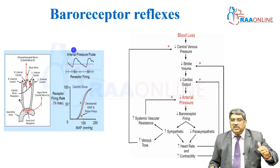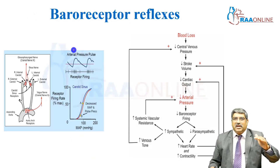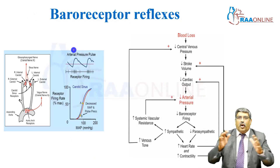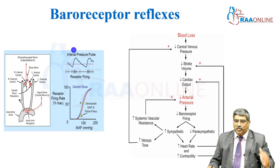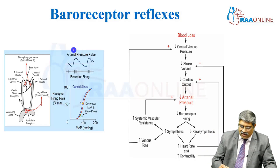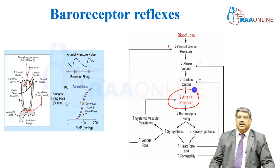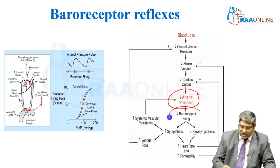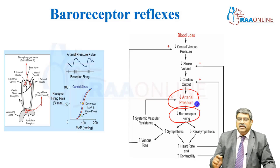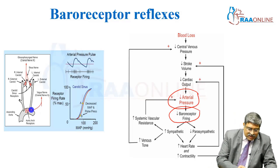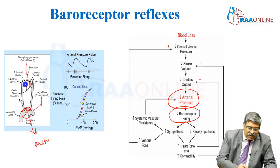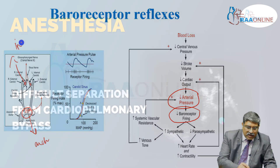Let us look at what happens if the pressure drops and how the body compensates to increase blood pressure. Whenever there is a fall in blood pressure, the baroreceptor is activated. This baroreceptor is located at the arch of the aorta and the internal carotid artery.